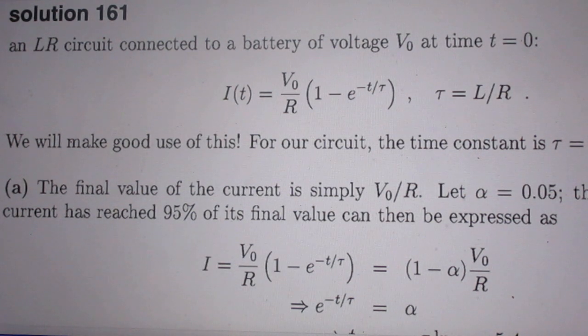An LR circuit connected to a battery of voltage V0 at time t equals zero is given by this equation. I have derived that in my lectures and tau here is L over R.